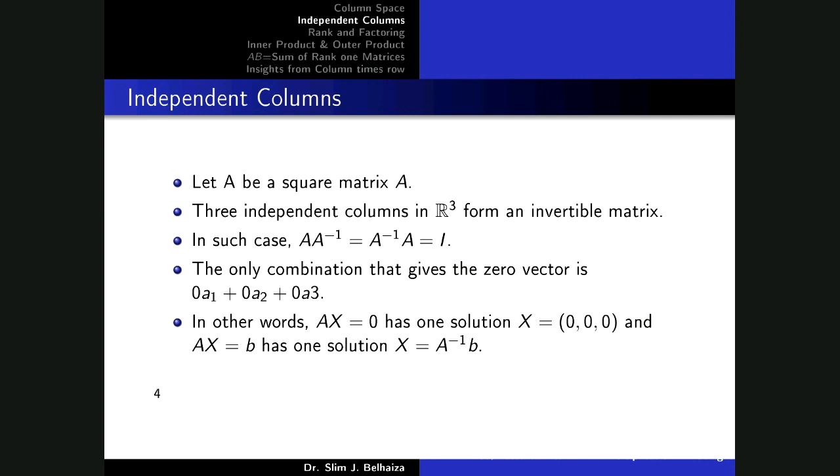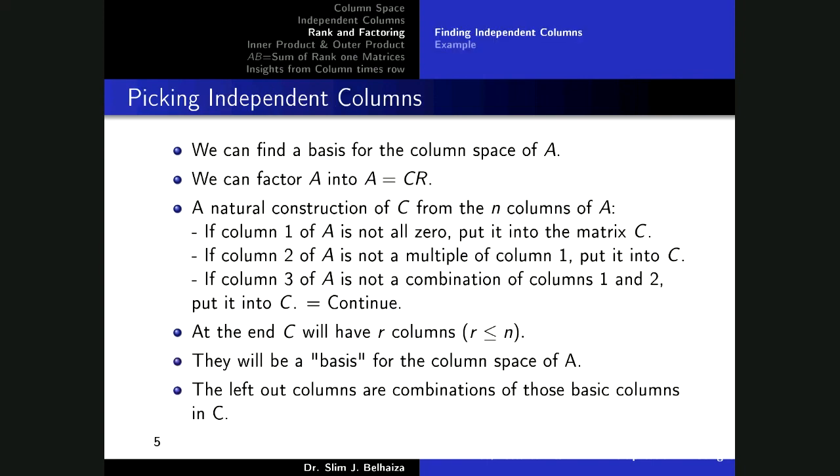What about independent columns? If A is a square matrix and you have three independent columns, then you have what we call an invertible matrix. There exists a matrix A inverse such that A times A inverse equals A inverse times A equals the identity matrix. Another way to verify the independence is to see that the only combination that gives the zero vector is 0·A1 + 0·A2 + 0·A3.